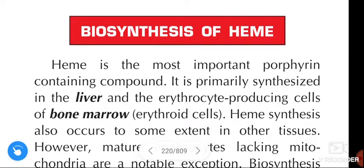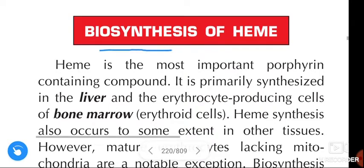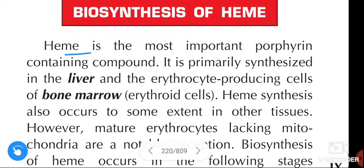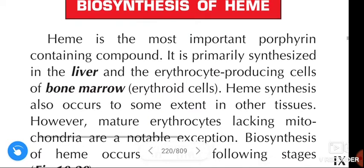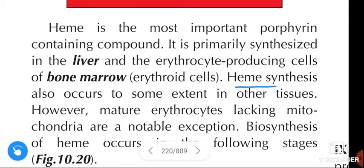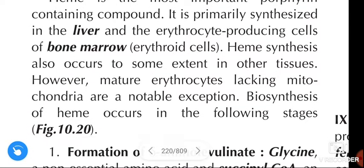Om Namah Shivaya. Hi friends, how are you? In this video, we are going to learn about the biosynthesis of heme. Heme is the most important porphyrin-containing compound. It is primarily synthesized in liver and the erythrocyte-producing cells of bone marrow, i.e. erythroid cells. Heme synthesis also occurs to some extent in other tissues. However, mature erythrocytes lacking the mitochondria are a notable exception.